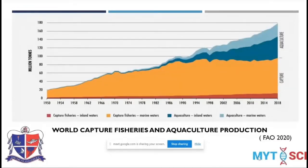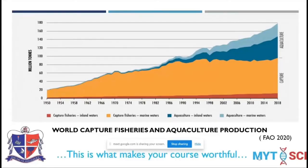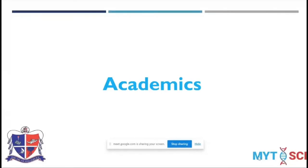World capture fisheries and aquaculture production has increased from 1950 to 2018 to nearly 180 million tons. This growth is what makes the topic important in terms of academics and career. Fish and aquaculture have a great impact over the entire globe, which makes this course worthwhile.